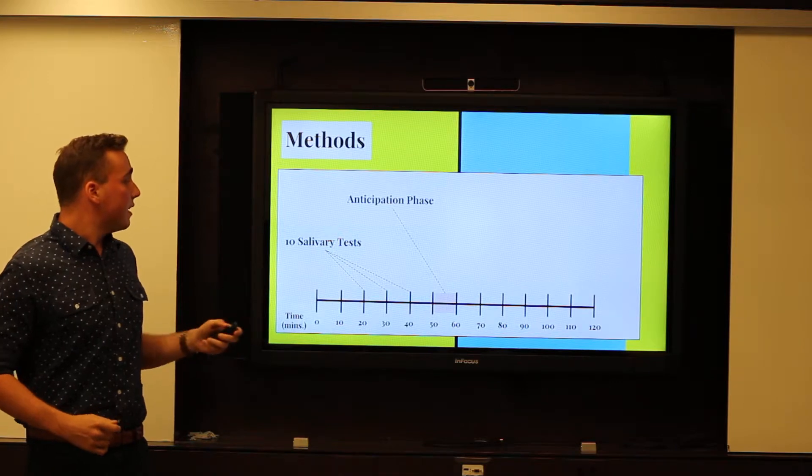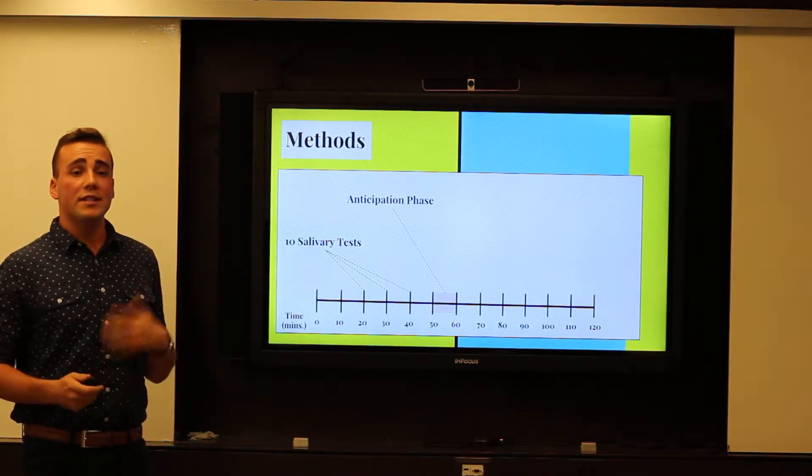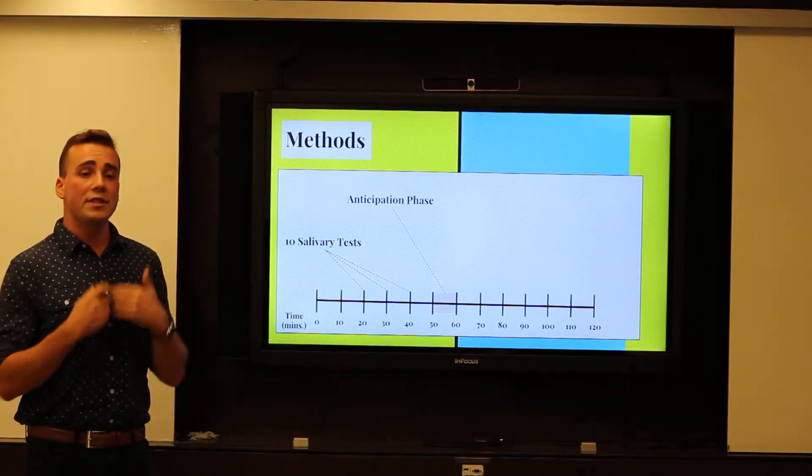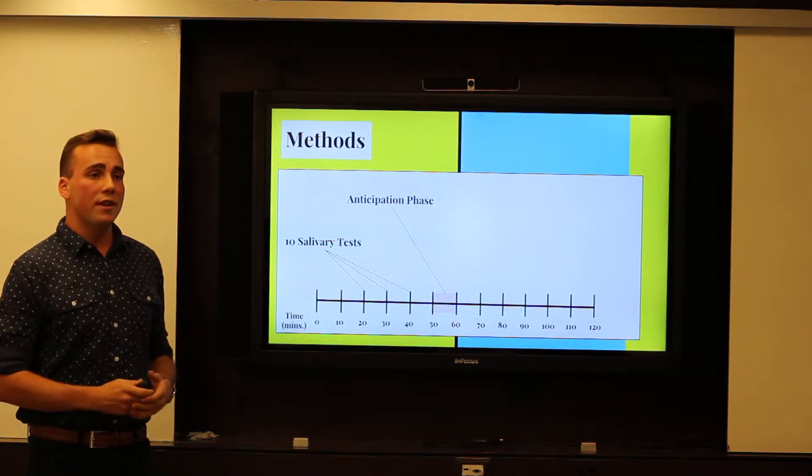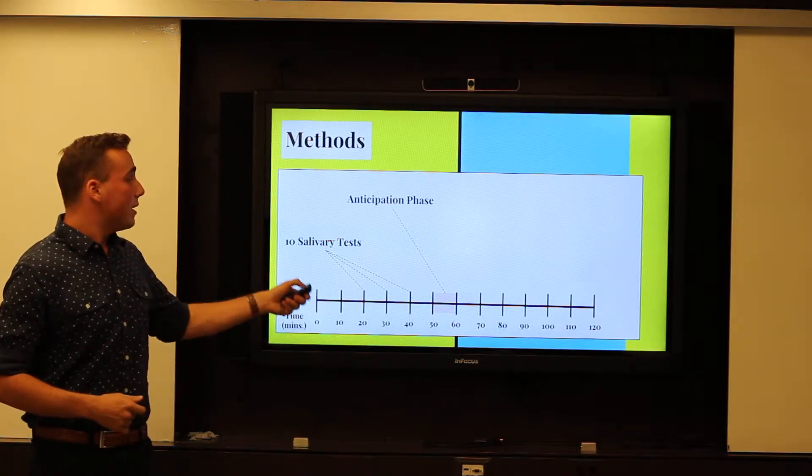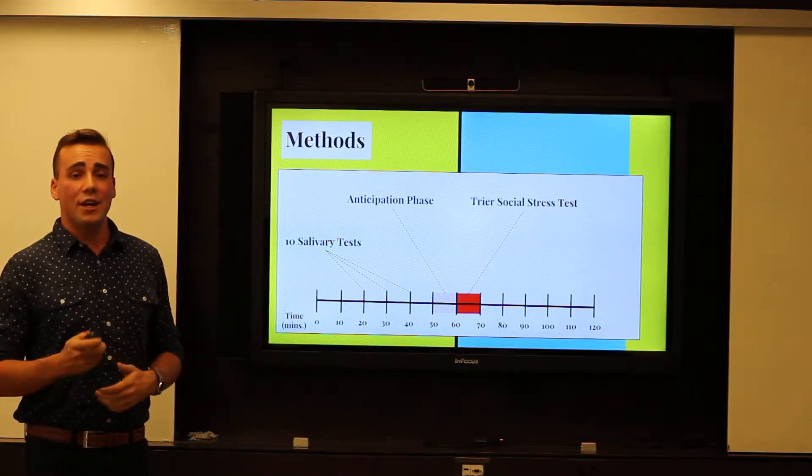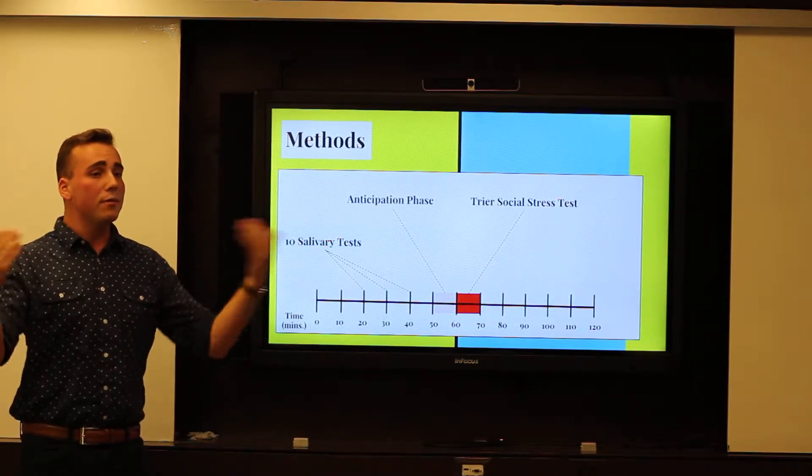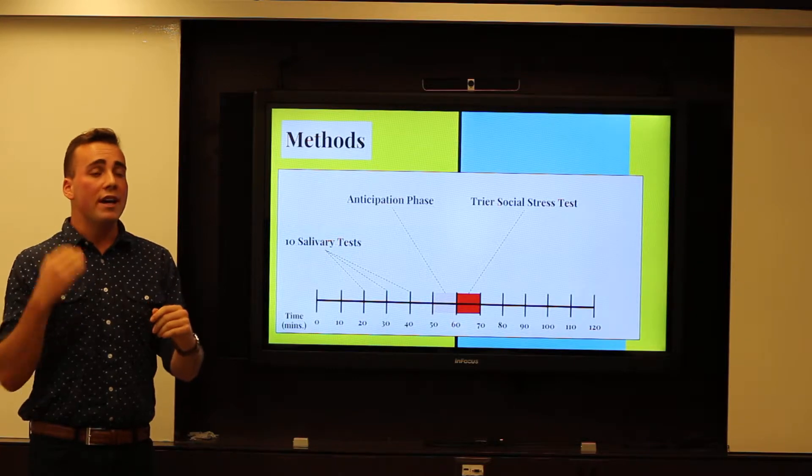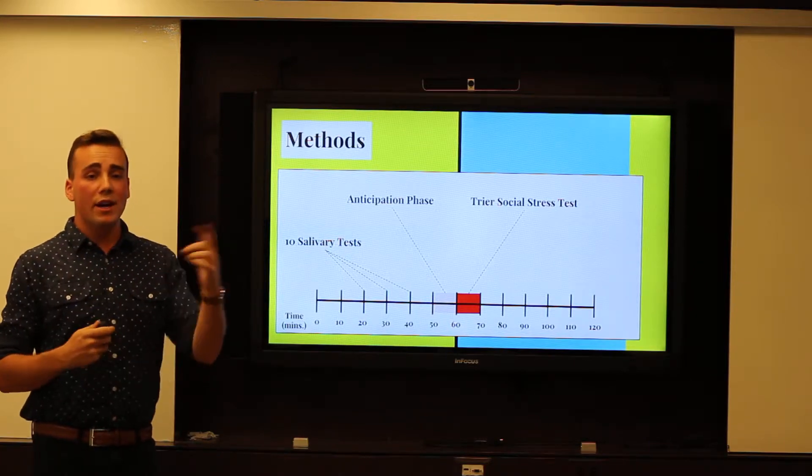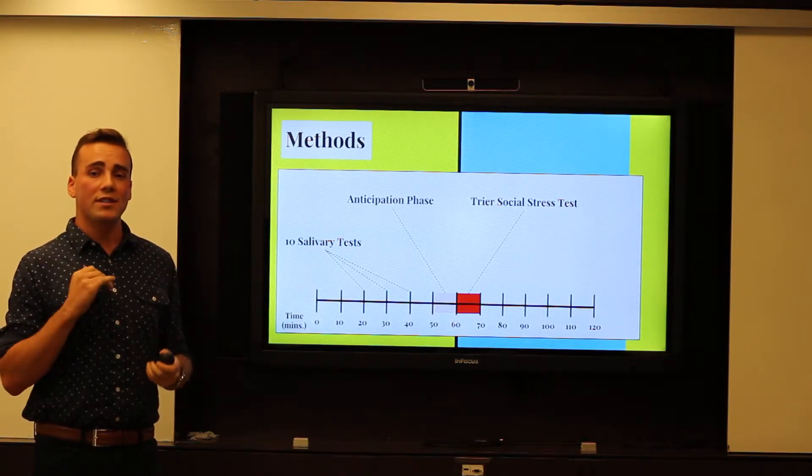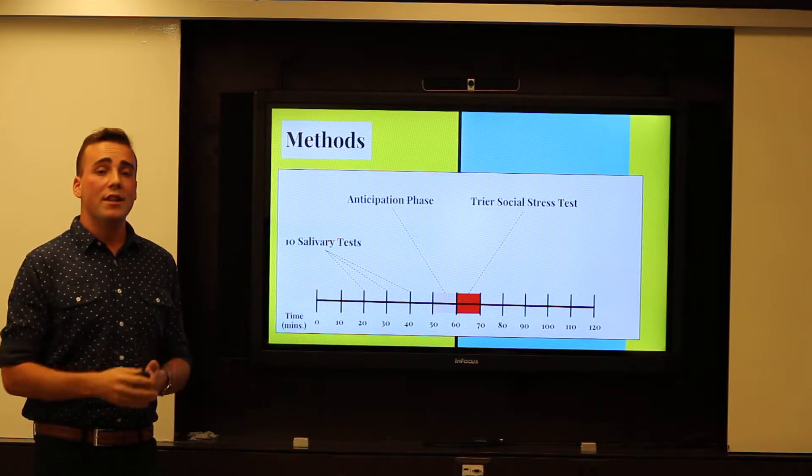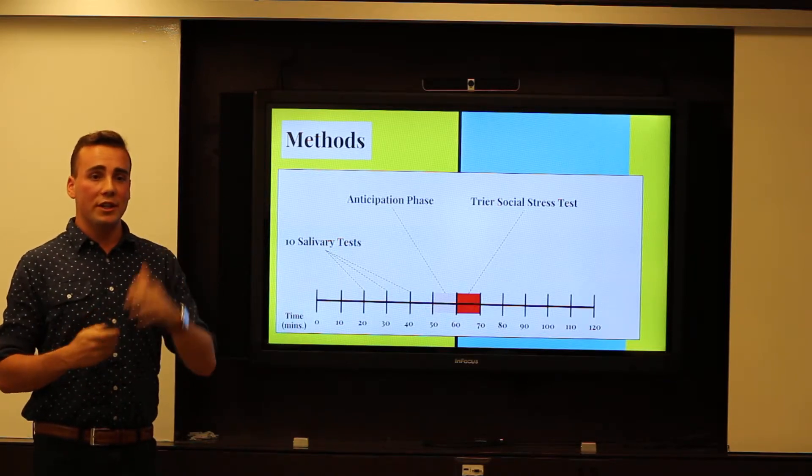Then, at 50 minutes, the anticipation phase began. The anticipation phase would begin with the researchers telling the participants what stressful event they would have to endure. And after 60 minutes, the Trier Social Stress Test actually occurred. For the first five minutes, the participants were in a room where they had two cameras facing them, a microphone in front of them, and they were facing a two-way mirror, behind which all of the researchers would actually conduct a mock job interview with them. They had to respond just facing the mirror and looking at themselves.